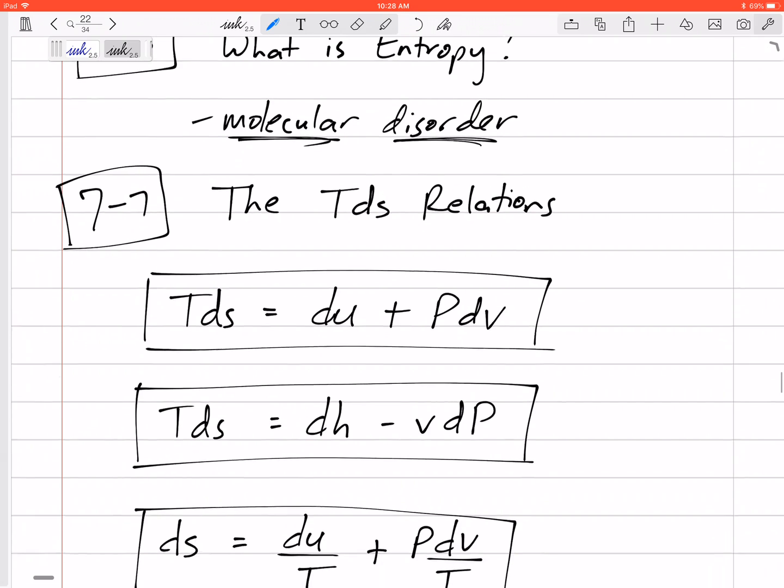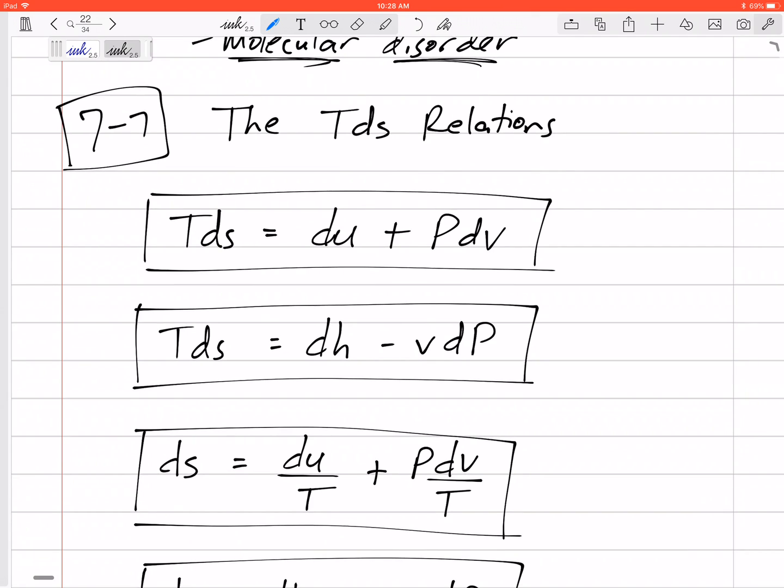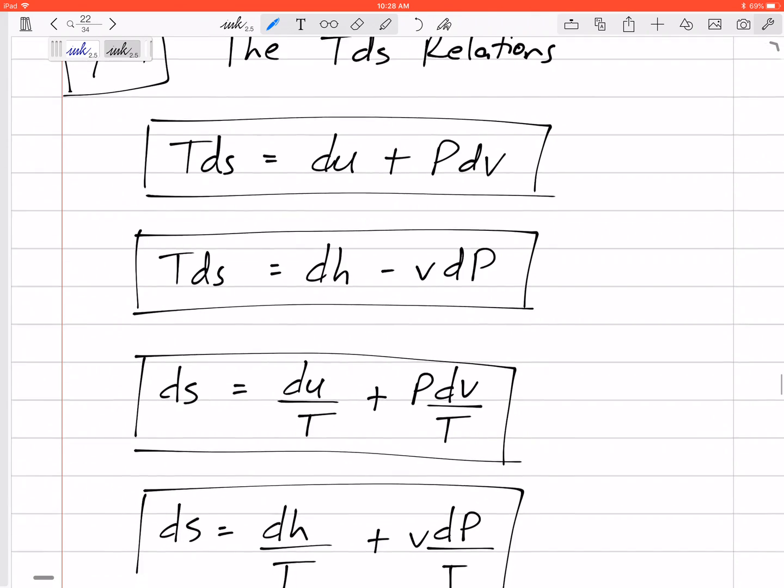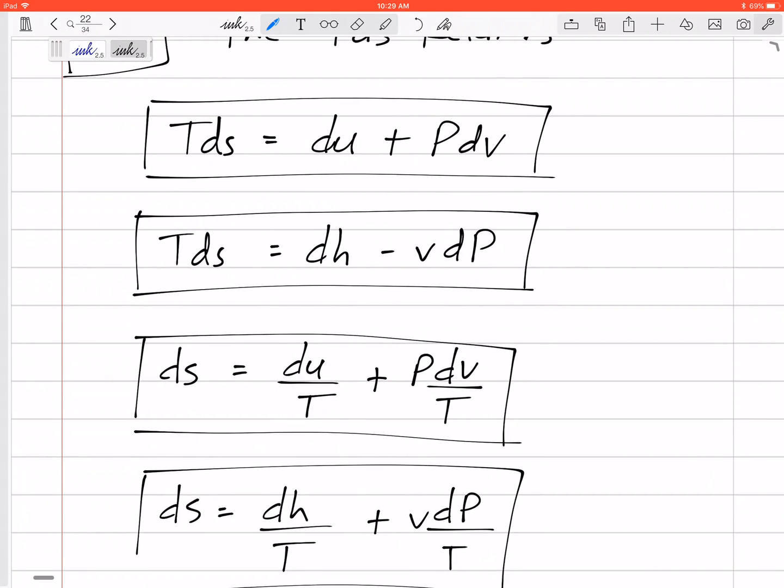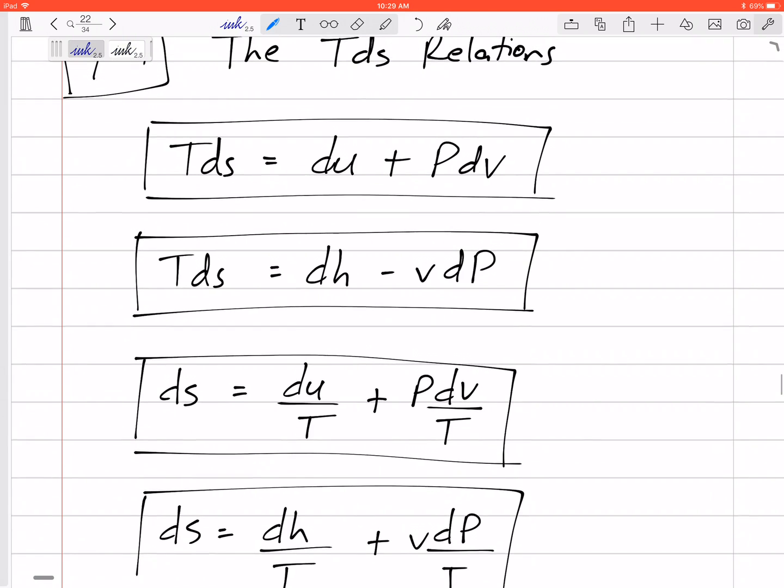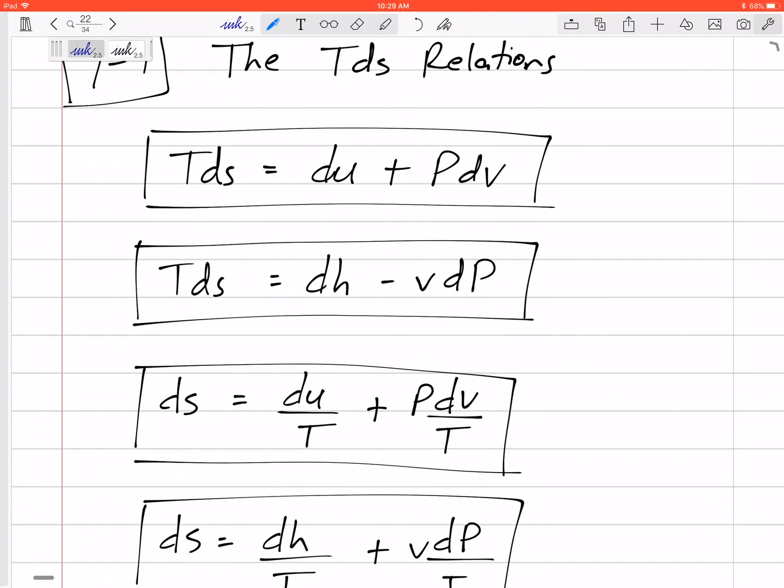Alright, seven real quickly is just the TDS relations. We could derive these. But it really comes from the fact that this TDS is Q and this PDV is work. And this DU is just that DU.